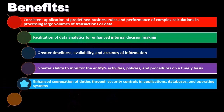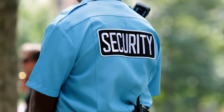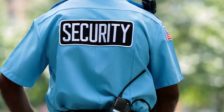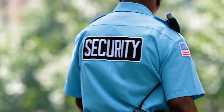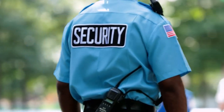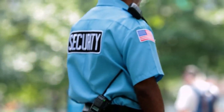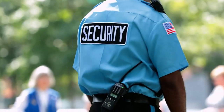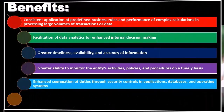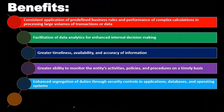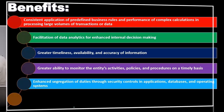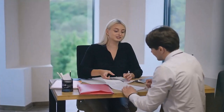Enhanced segregation of duties through security controls, applications, databases, and operating systems is another key benefit. Segregation of duties is one of the major internal controls — one of our checks and balances. The system allows us to say you only have control over this part, and you only have control over that part, separating duties. As a company grows and gets larger, we typically have more internal controls and more separation of duties.